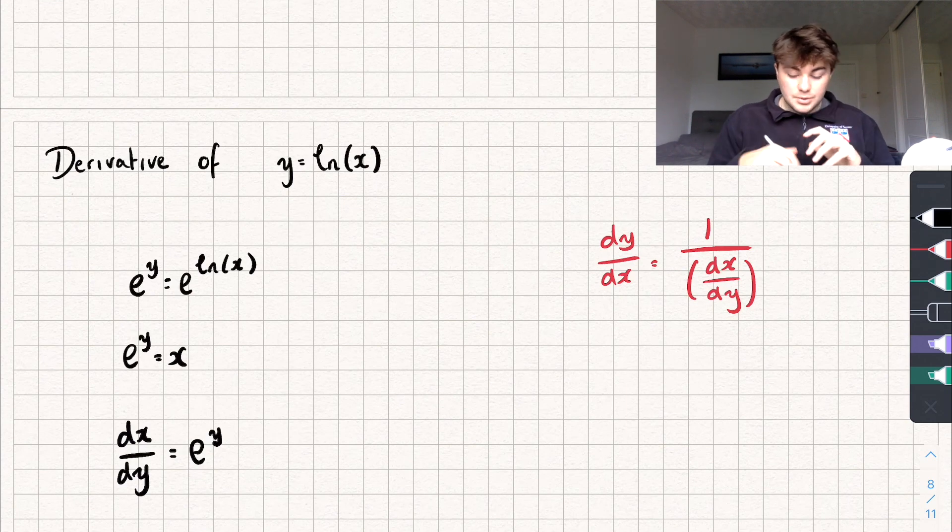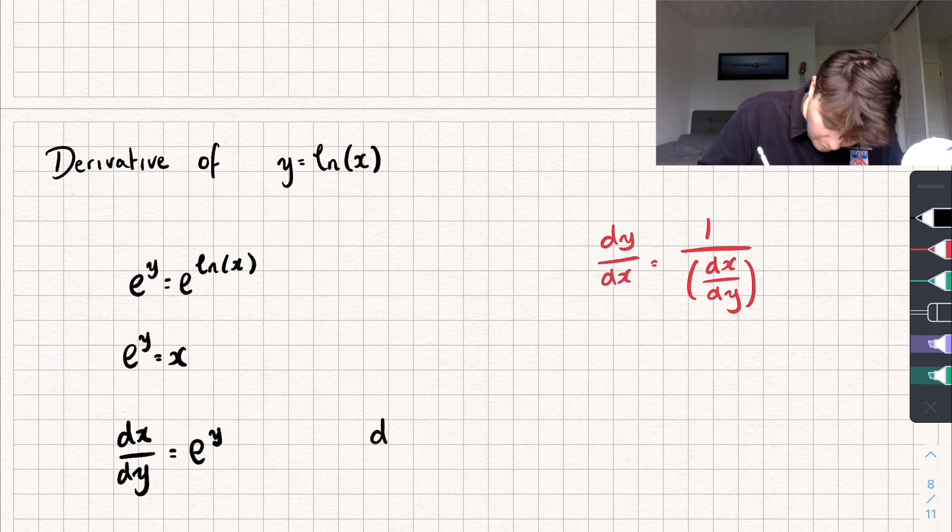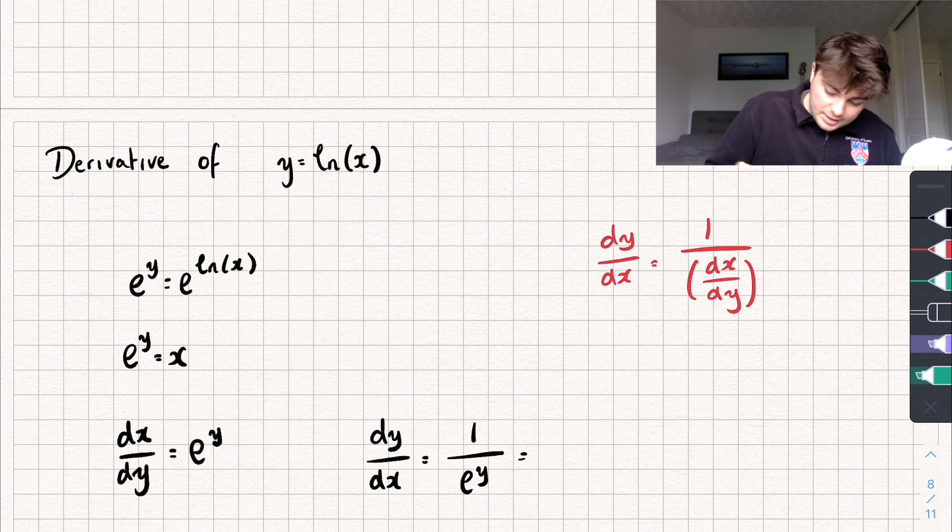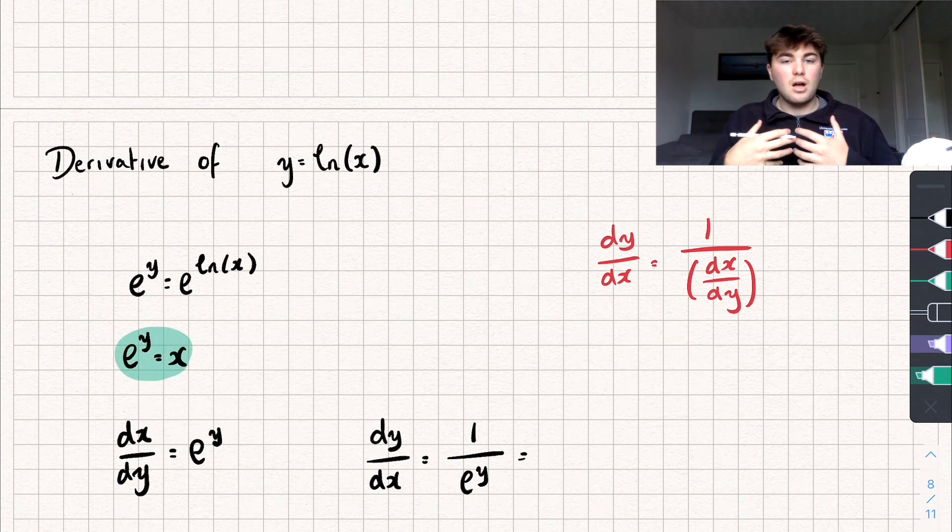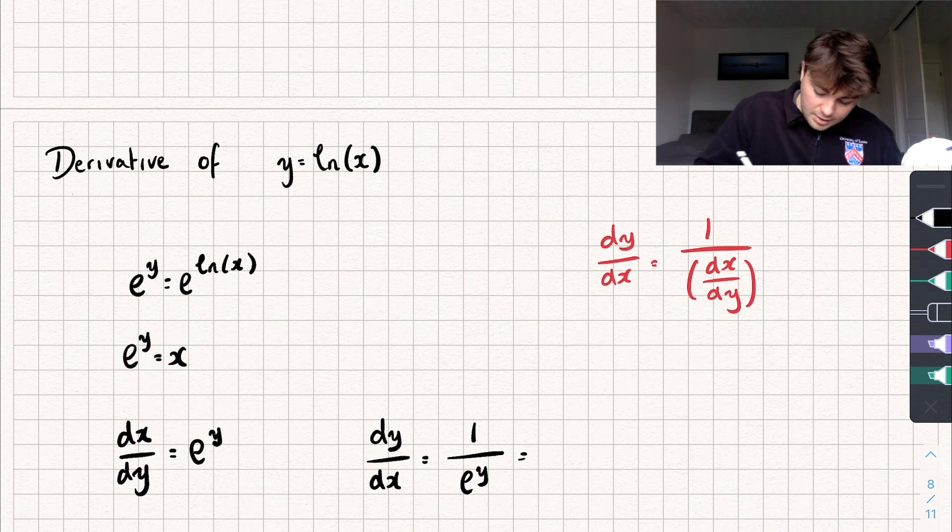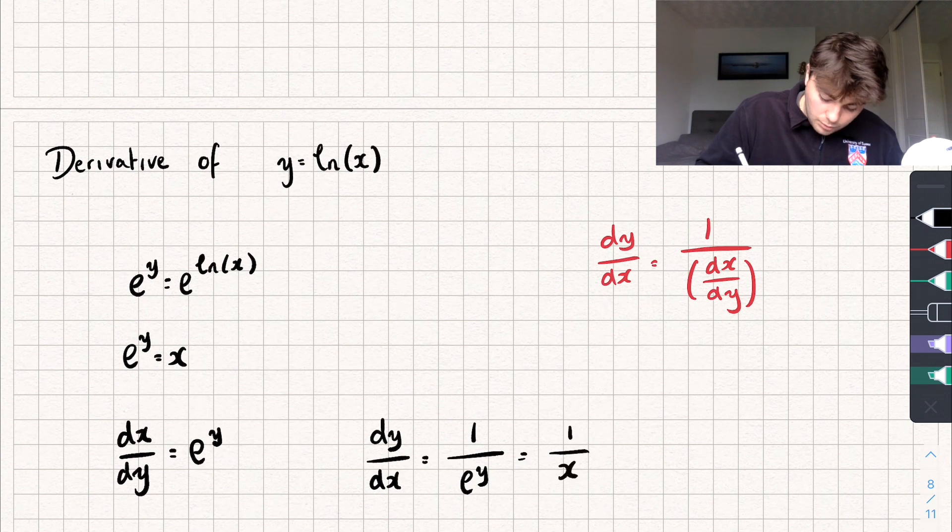And now I can substitute this into my formula up here to find dy by dx. And I get dy by dx is equal to 1 over e to the y. And if you take a look here we said that e to the y was just equal to x. And so we get this derivative is just equal to 1 over x.